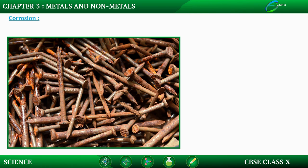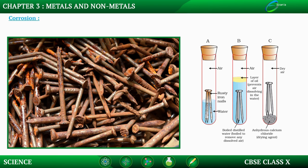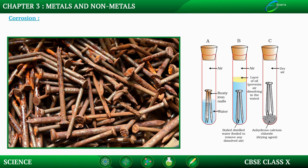Copper gains a green coat, and this green coat is copper carbonate. Now here is an experiment: there are three test tubes A, B, and C with iron nails inside. In A we add only water; in B there is boiled distilled water with about 1 ml of oil; and in C we add anhydrous calcium chloride. After a few days you will observe that the nail in contact with water becomes rusty but the others do not.